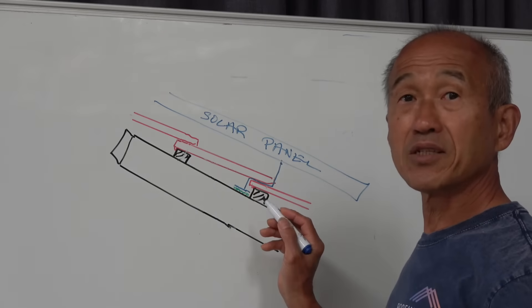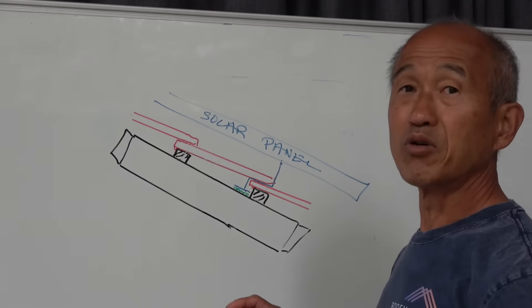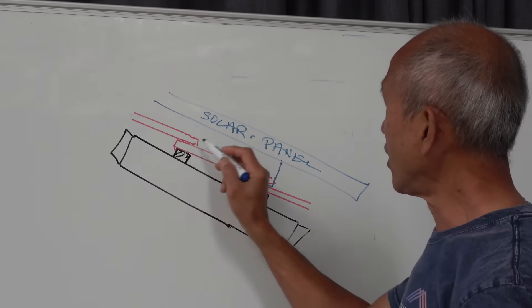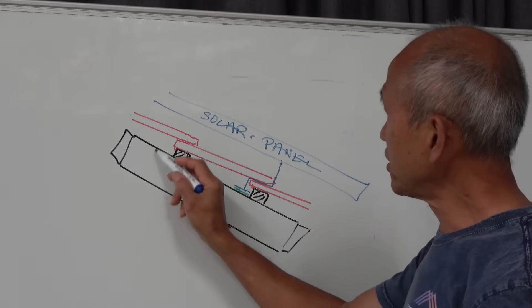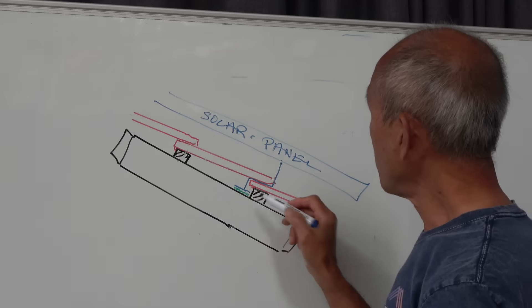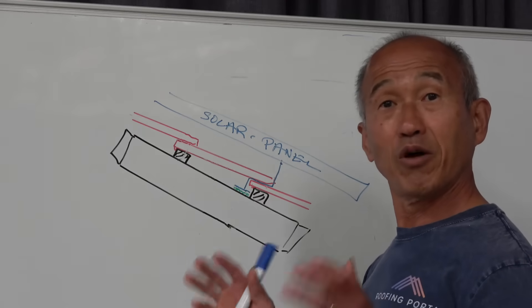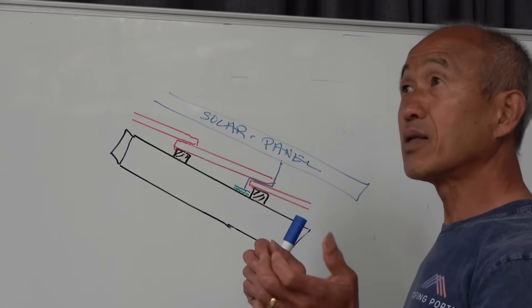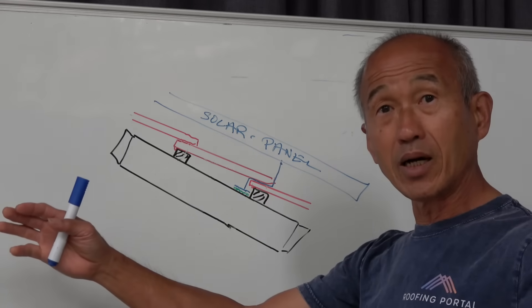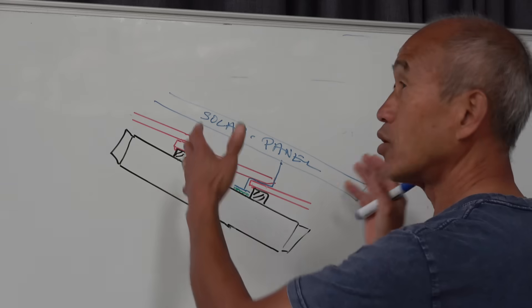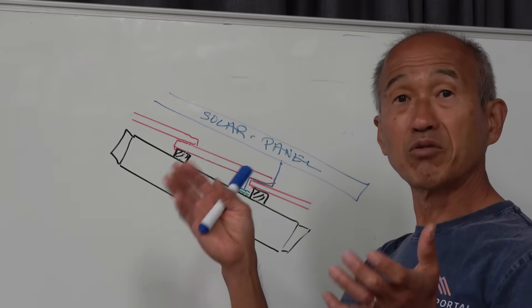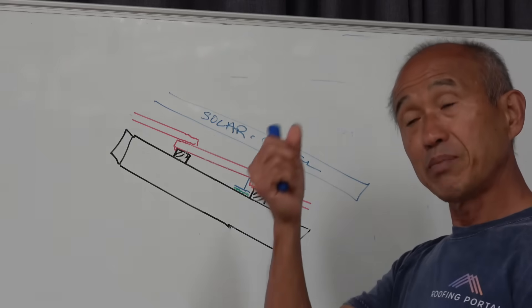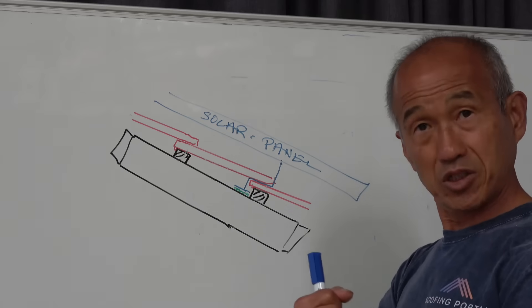So here we see a typical installation on a tile roof. We've got a solar panel and we've got the tiles. This is the rafter and we've got a baton. Now for those of us who have actually handled a solar panel, you would know that a solar panel is quite light. They're quite large and light, so when you mount them on the roof they tend to act like a sail.